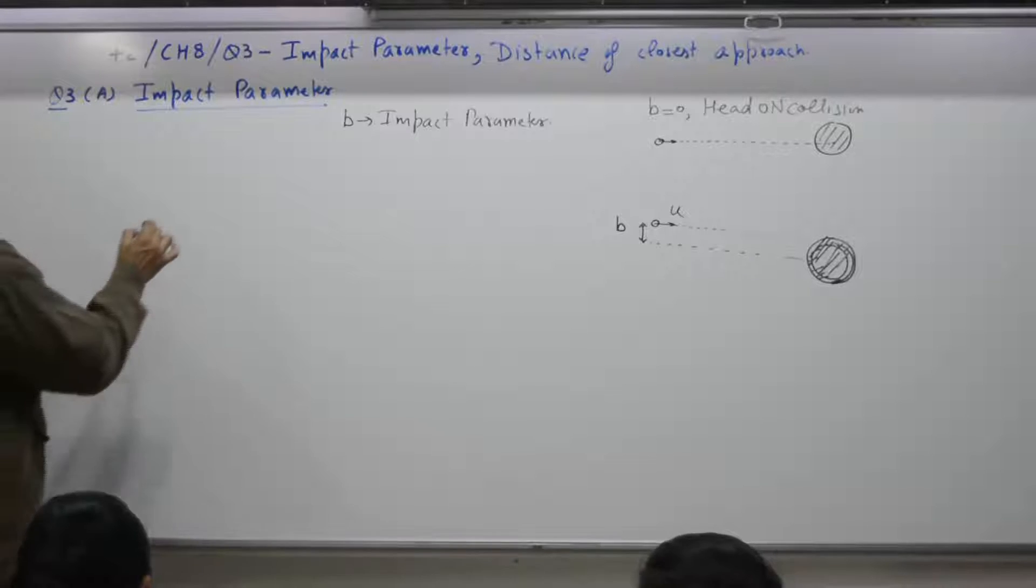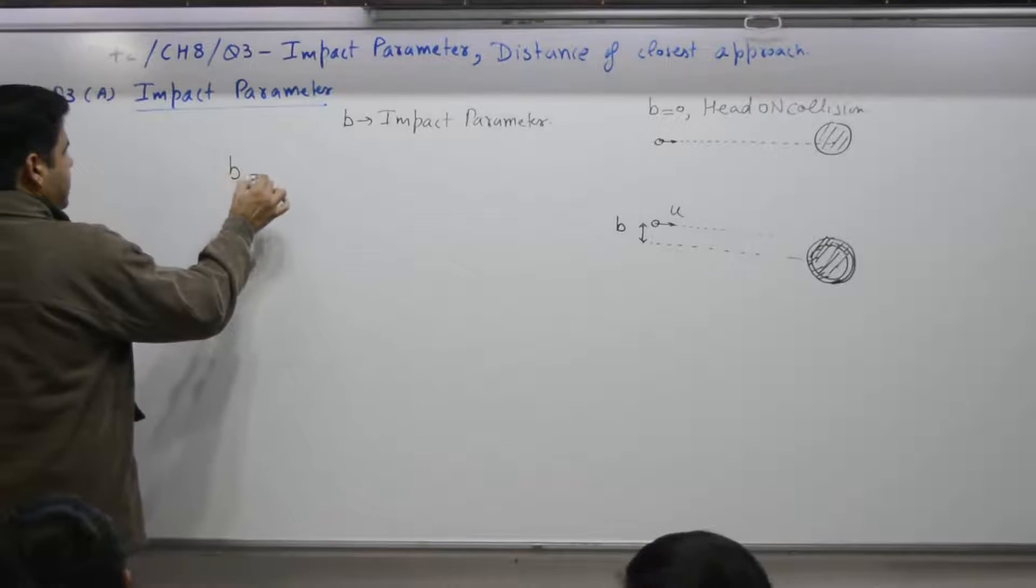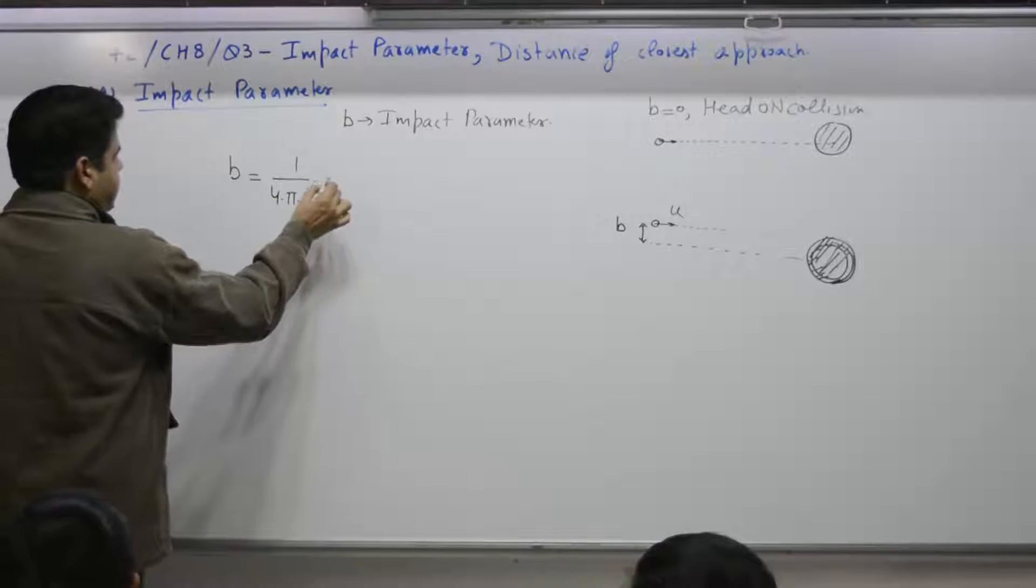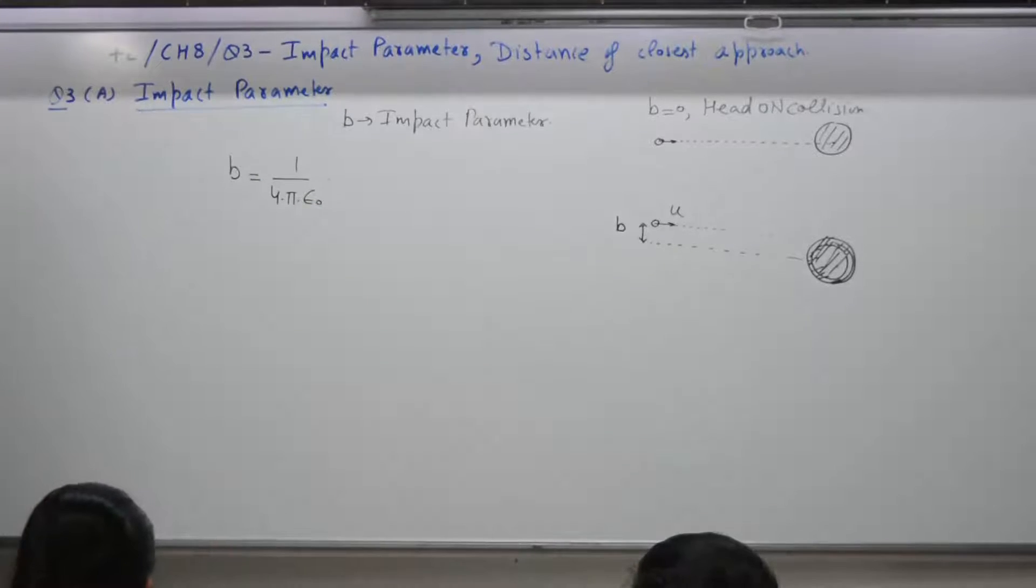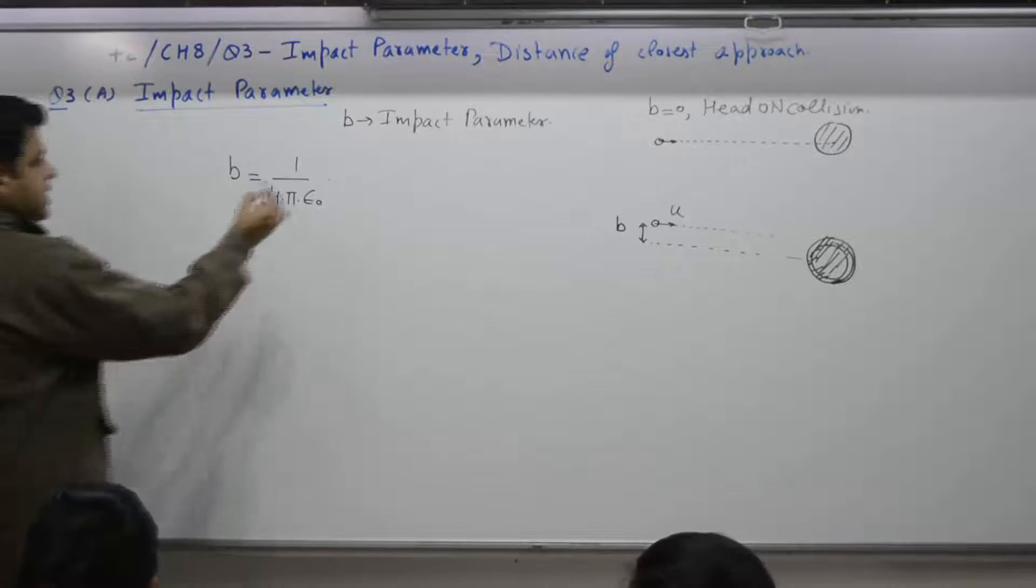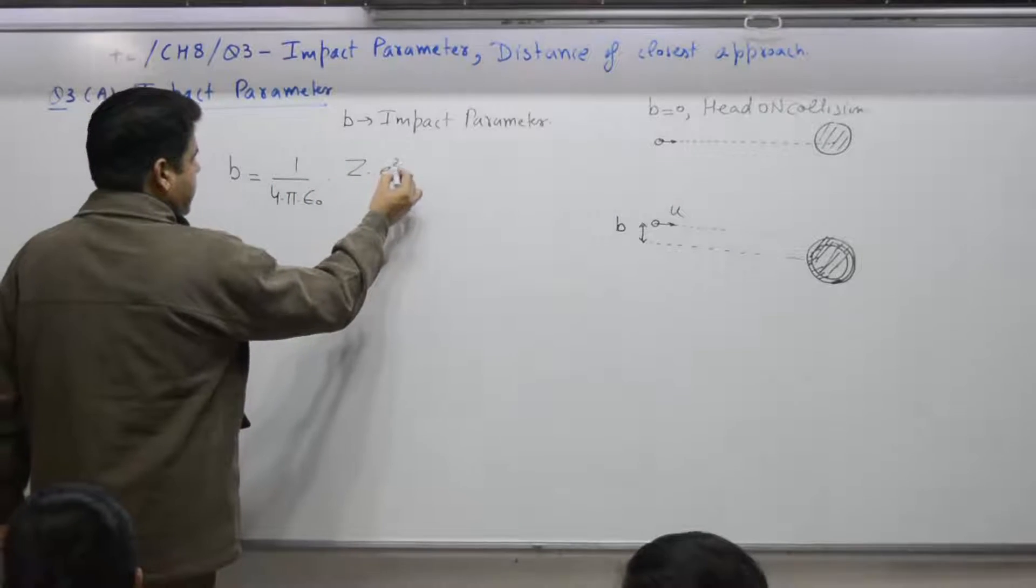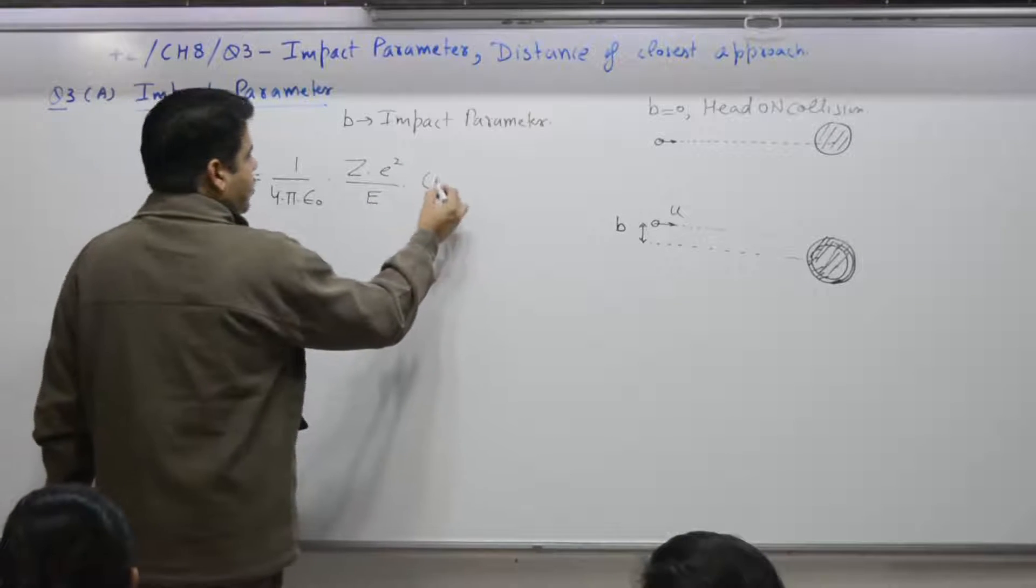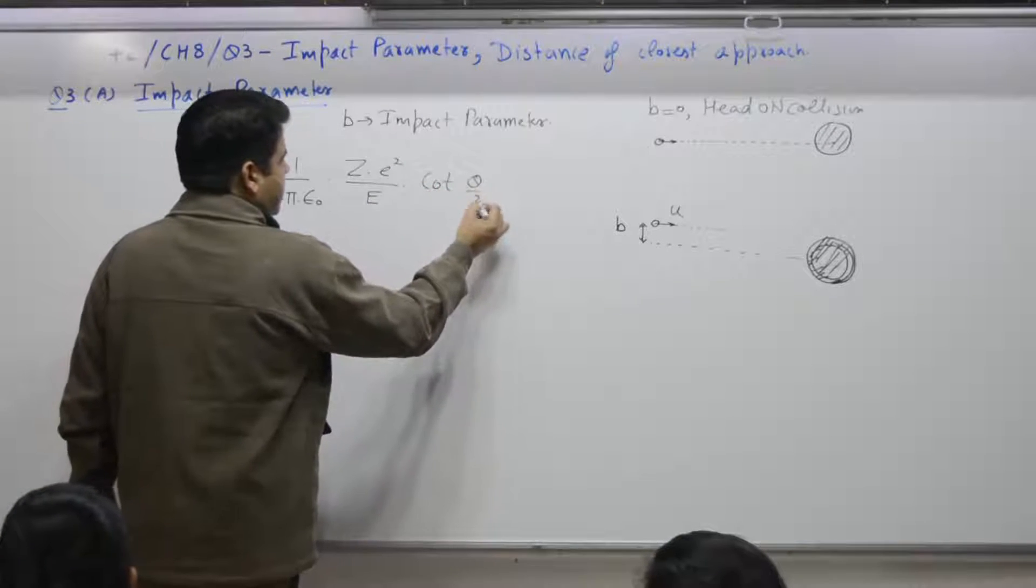And the formula is, yes, B is equal to, yes, 1 by 4 pi epsilon naught. Other parameter is what? Z and E. Z small e square, capital E represents energy and cot theta by 2.